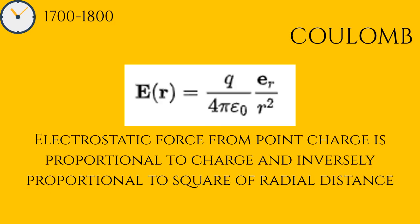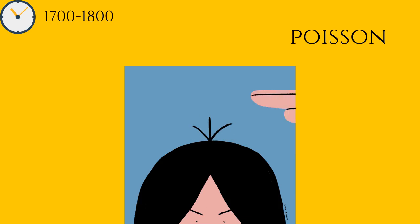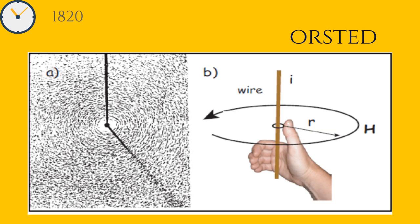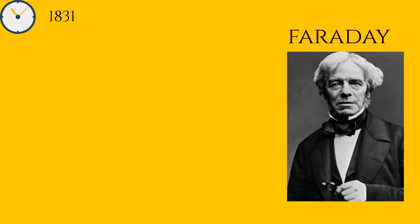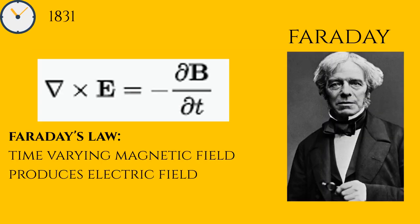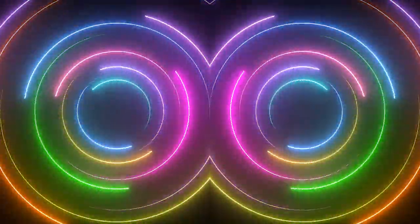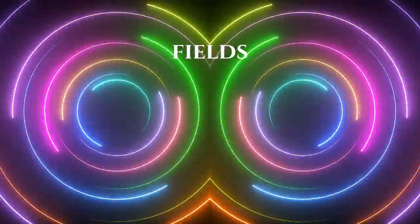In the late 1700s, an understanding of electric phenomena was pioneered by Benjamin Franklin, Charles Augustin de Coulomb and others. Poisson, Gauss and others developed electrostatics and magnetostatics. In 1820, Hans Oersted found that electric currents produced magnetic fields. In 1831, Michael Faraday discovered electromagnetism. He observed that a changing magnetic field produces electric current. Faraday discarded the medium and ether theories for carrying electricity and magnetic forces, and introduced the concept of fields to physics.